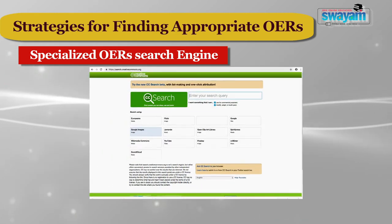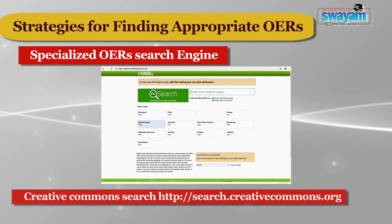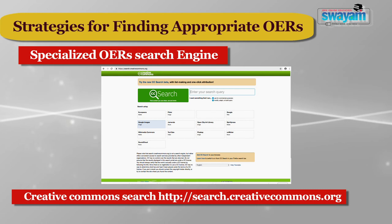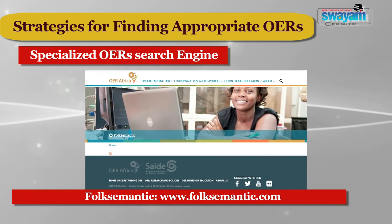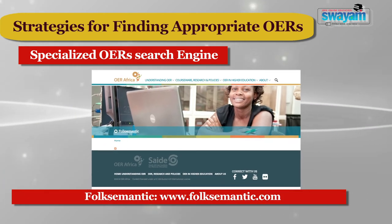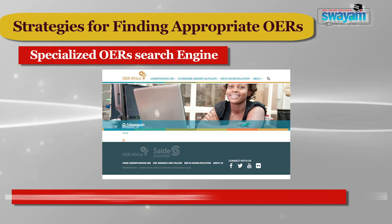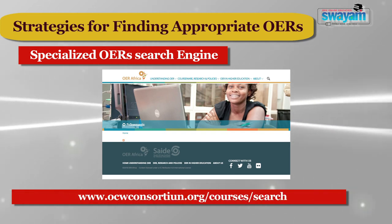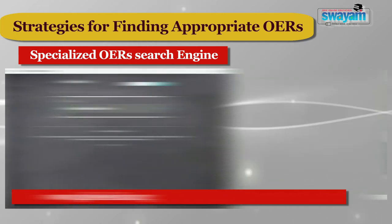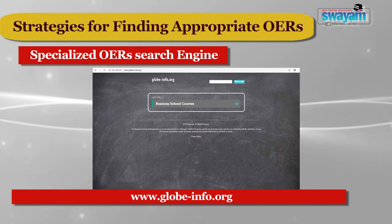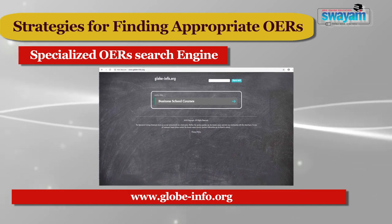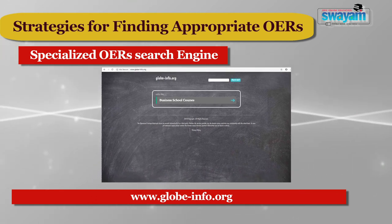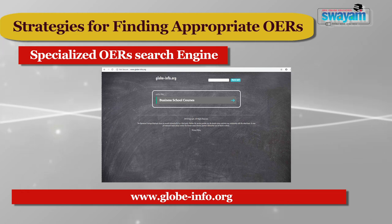Examples of specialized OER search tools include: Creative Commons Search at search.creativecommons.org; Foxsemantic.com; Open Courseware Consortium; Global Learning Objects Brokered Exchange — Glob-Alliance — which is also a specific search engine for open educational resources.